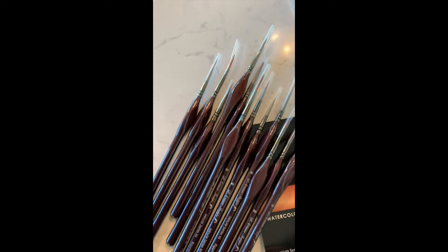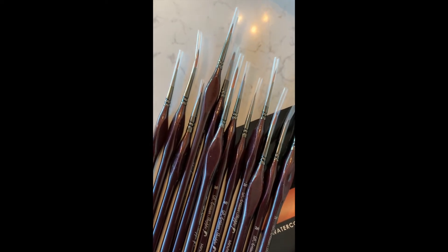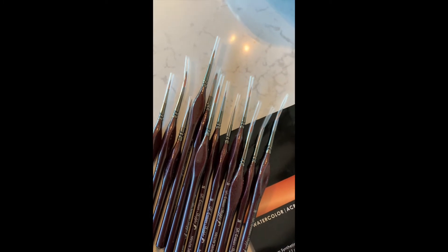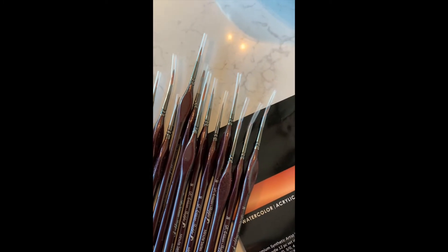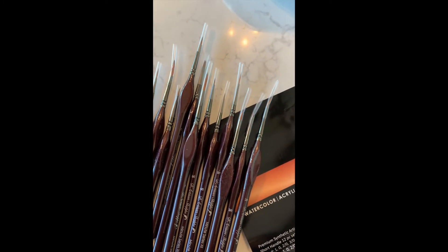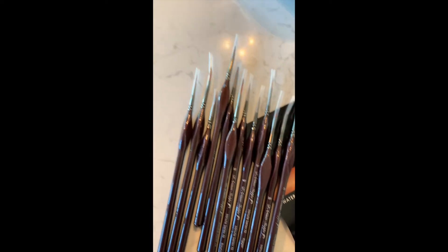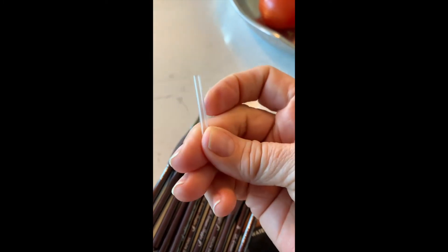As you can see, they're tiny. I have a round, and the sizes are 1, 0, 2, 3, and 4. A long liner, same sizes, and a flat 1 and 0. As you see, they came with lids. Well, not lids. These little plastic covers, and that keeps the brush.